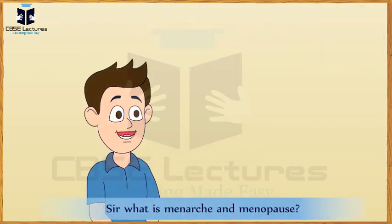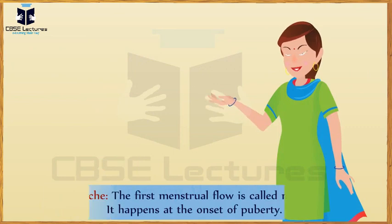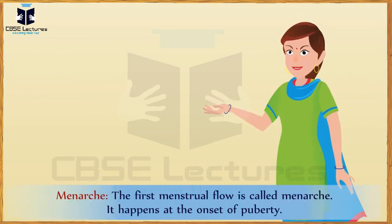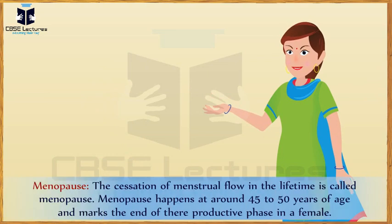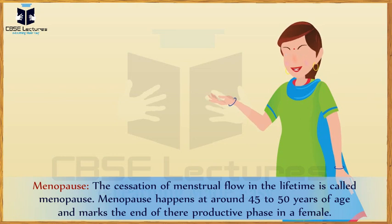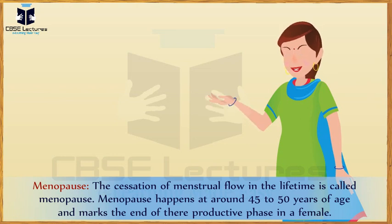What is menarche and menopause? Menarche — the first menstrual flow — is called menarche, and it happens at the onset of puberty. Menopause — the cessation of menstrual flow in the lifetime — is called menopause. Menopause happens at around 40 to 50 years of age and marks the end of the reproductive phase in a female.